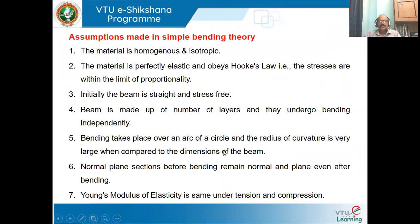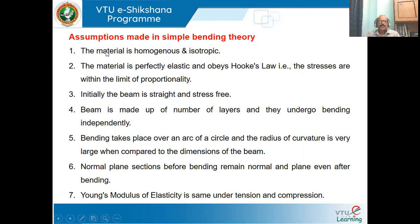Before deriving the expression for pure bending, we need to know the assumptions. These are the important assumptions to keep in mind before obtaining the famous bending formula, also known as Euler's bending formula. First and foremost, the material is homogeneous and isotropic — this is the most important assumption in mechanics of materials. Homogeneous means the structure of the material is the same throughout; isotropic means the properties of the material are the same throughout.